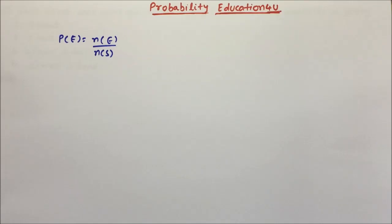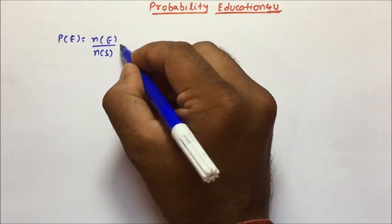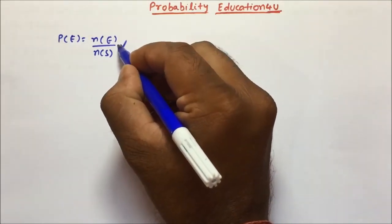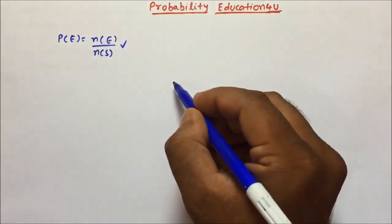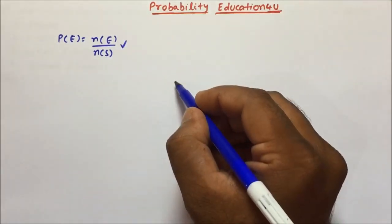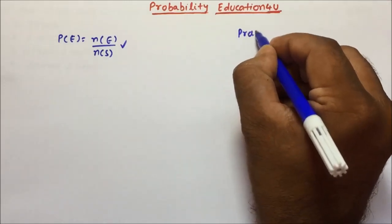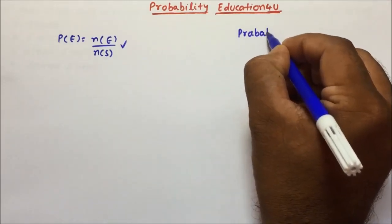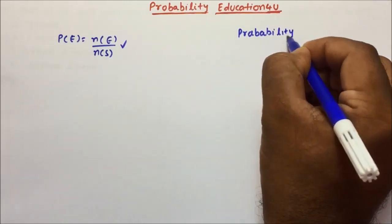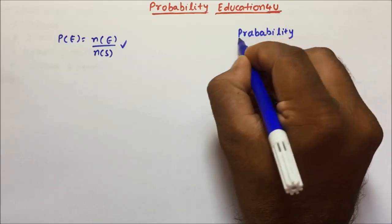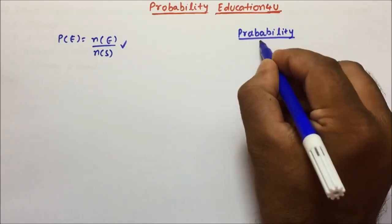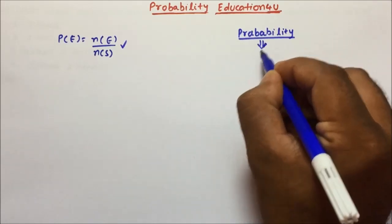So let us start with the basics and then we will try to solve a few questions based on that. By the formula, probability will be NE by NS. But first understand what is probability — probability is the chances of happening an event.